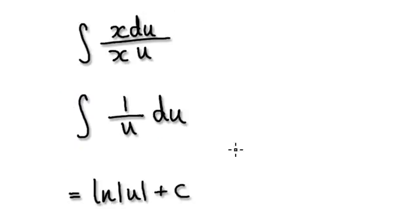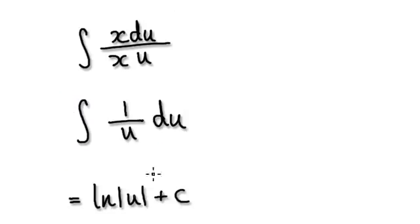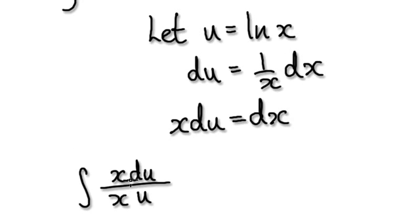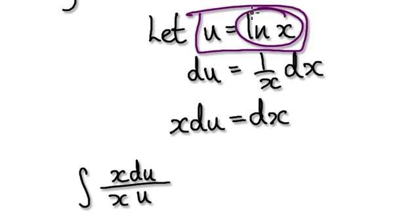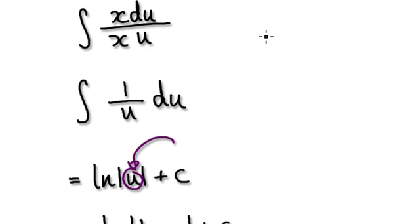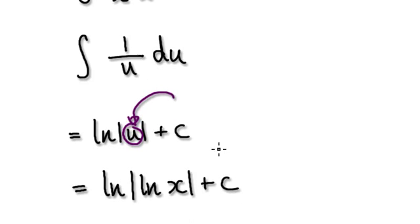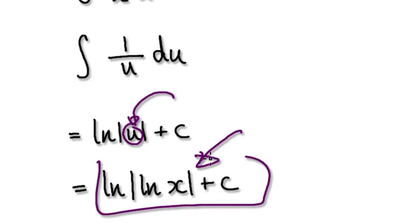Substitute back in for u. Remember, we said let u equal this thing here. So let's put this back in for u — that would then give us this. So the final answer would be this.